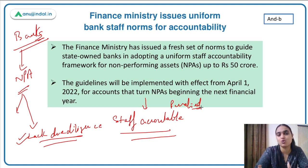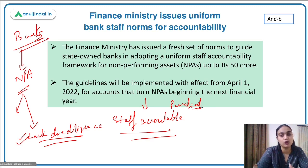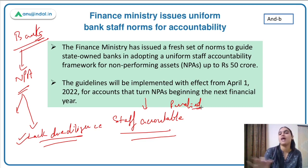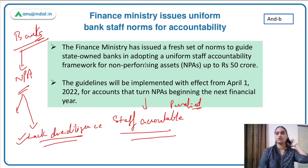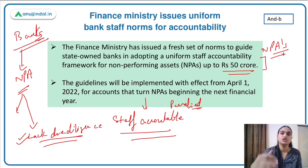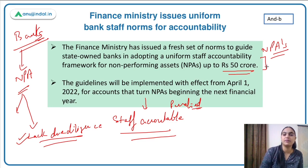A major issue with the existing policy was that each bank had its own norms for staff accountability — for holding those who sanctioned loans responsible when those loans turned into NPAs and penalizing them. The Finance Ministry has now said that a new, uniform set of rules will apply to all state-owned banks. No bank can have its own separate policy anymore. The Finance Ministry has issued fresh norms for a uniform staff accountability framework for NPAs up to ₹50 crore. The Indian Banking Association is working on these, and the rules will be notified by RBI and implemented from 1st April next year.